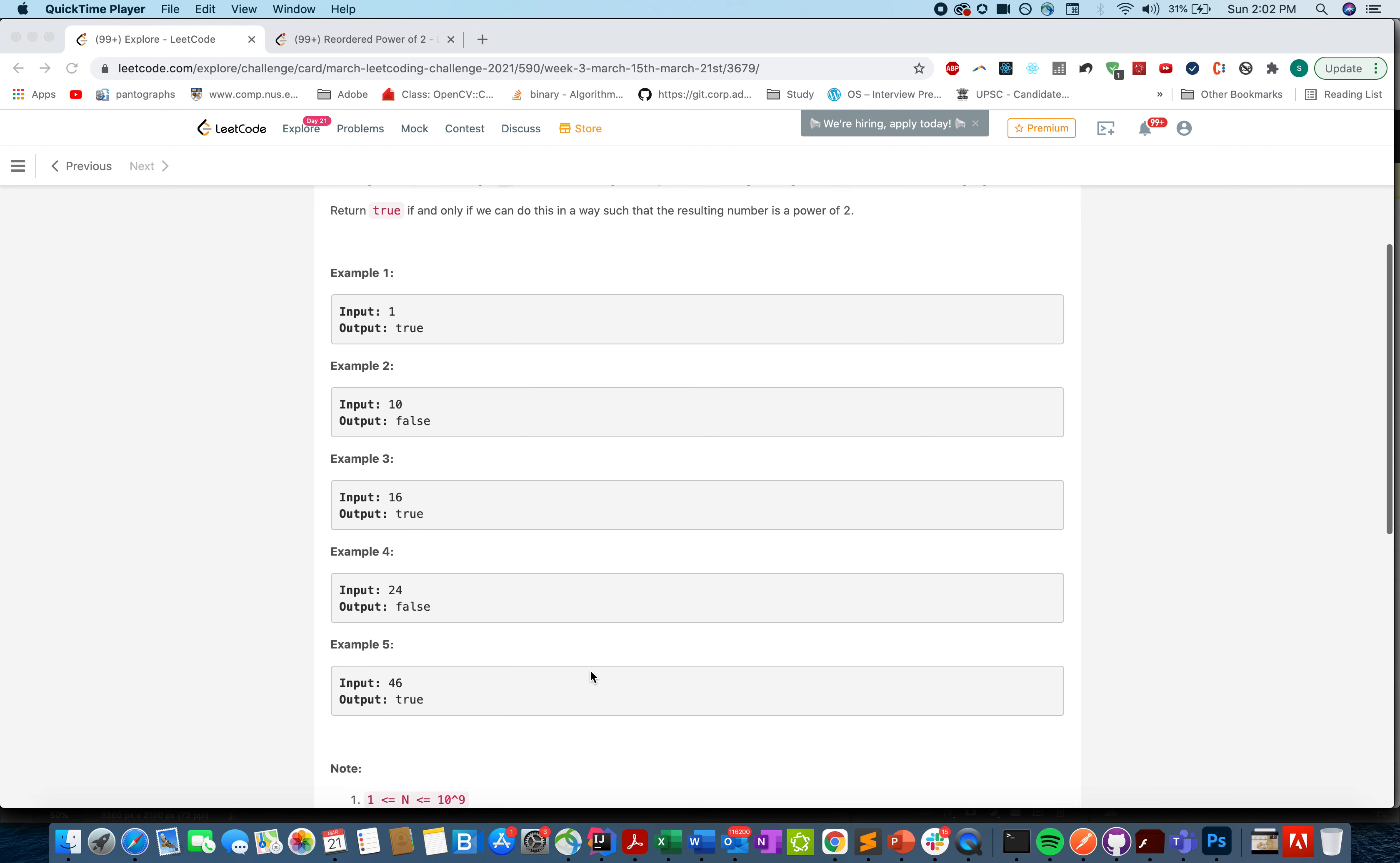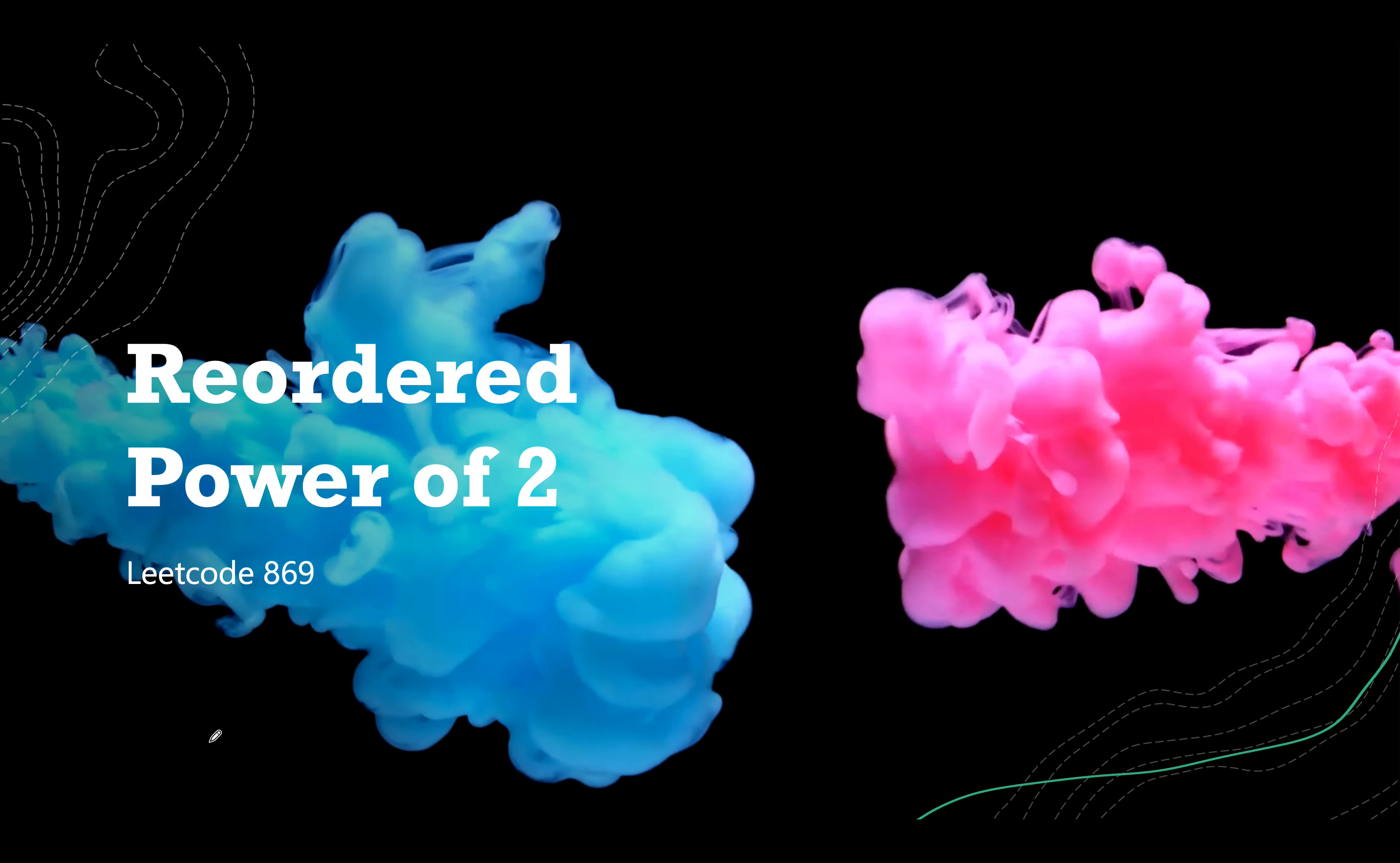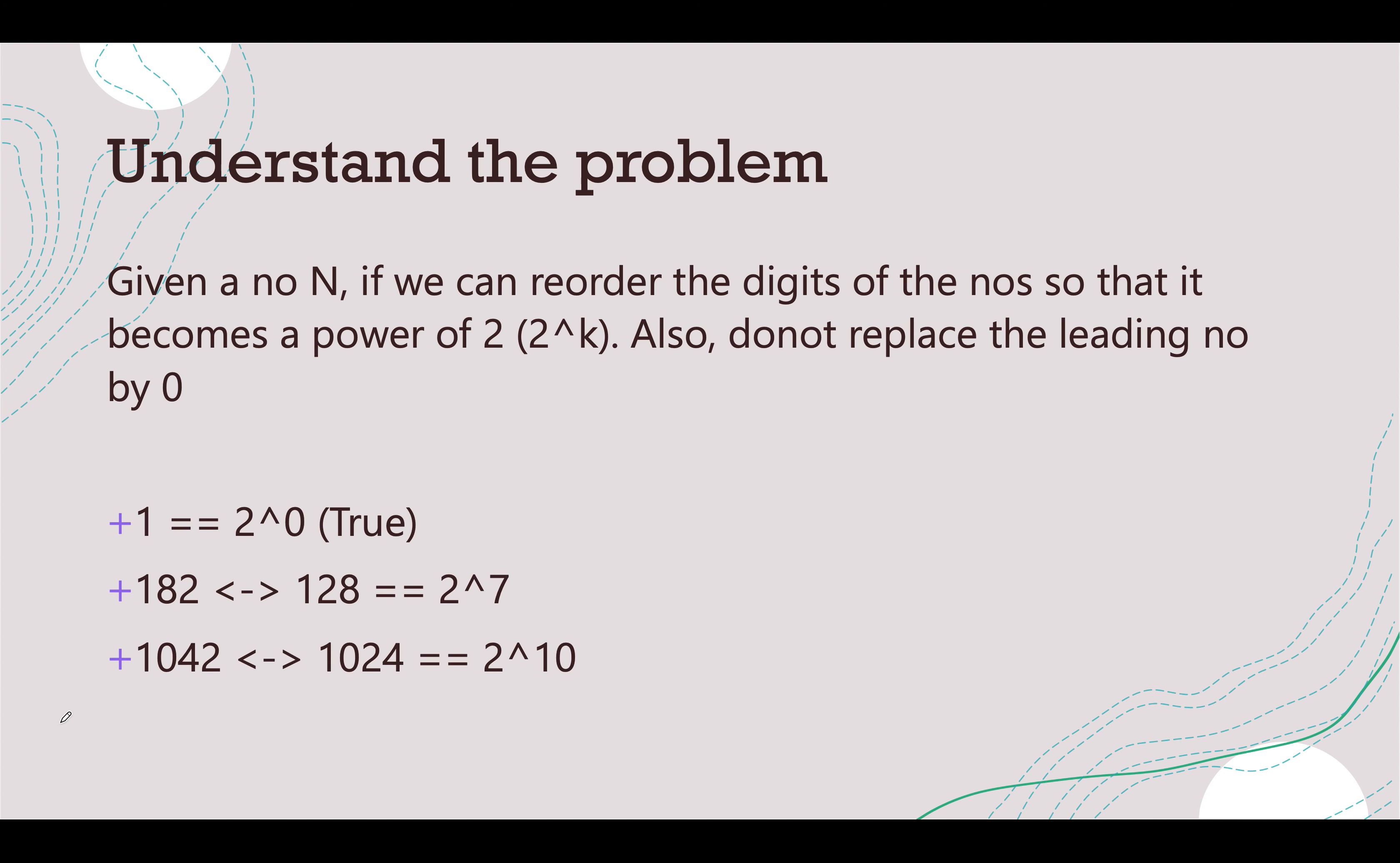I'll go into the examples in my presentation. Let me start the slideshow. Reordered Power of 2 LeetCode 869, let's understand the problem. The problem says you are given a number n and if we can reorder the digits of the number so that it becomes a power of 2, that can be any power of 2. If that is the case then we need to return true, otherwise we have to return false. Let's take a few examples here.